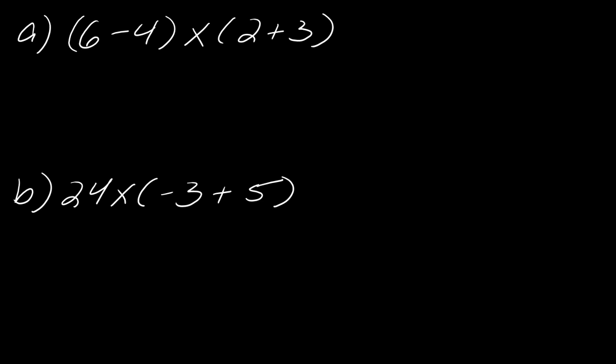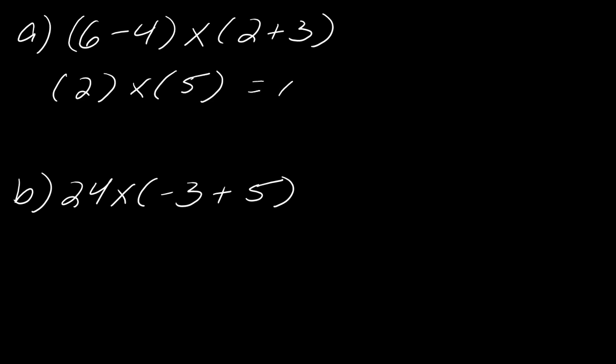For the rest of this video we'll look at a bunch of different examples working with PEMDAS. Example A is pretty straightforward — we have two sets of parentheses and then multiply the two results together. Six minus four equals 2, and two plus three equals 5, so we have 2 times 5, which equals 10. Why don't you give the next one a try and hit play when you're ready? Math is not a spectator sport — you'll learn more by trying it.